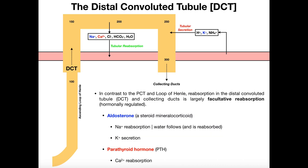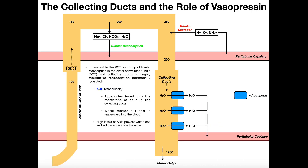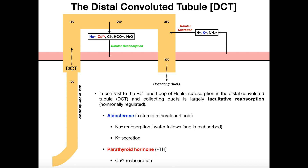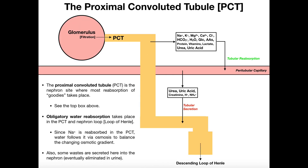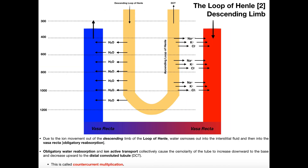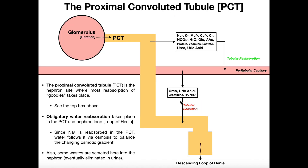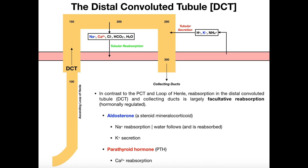When we look at the distal convoluted tubule and the collecting ducts, water reabsorption here is not obligatory. We have something called facultative water reabsorption, which basically means it's hormonally regulated. As we went through the proximal convoluted tubule and the loop of Henle, we really just had a baseline reabsorption and also some baseline secretion. But what happens if we need to reabsorb more things or secrete more things? Those ought to be hormonally regulated.